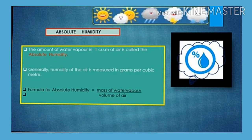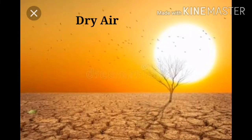Absolute Humidity: the amount of water vapor in one cubic meter of air is the absolute humidity of the air. Generally, humidity of the air is measured in grams per cubic meter. When the humidity in the air is 0 grams per cubic meter, the air is said to be dry, because there is no water vapor in the air.